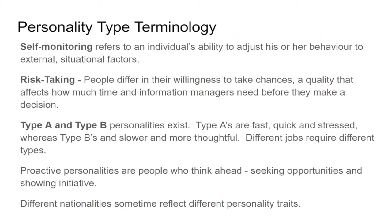Type A and Type B personalities are also common terms associated with personality. Type A personalities are hard-driving and very focused people — let's get the job done. Type B personalities are more laid back: you tell me what to do and I'll do it. You want a good balance of both in the workplace. Type A personalities are fast and quick but also stressed and can suffer health problems. We need Type B people to be slower and more thoughtful — we talked about this idea of sober second thought in law. Different jobs really require different types of people.